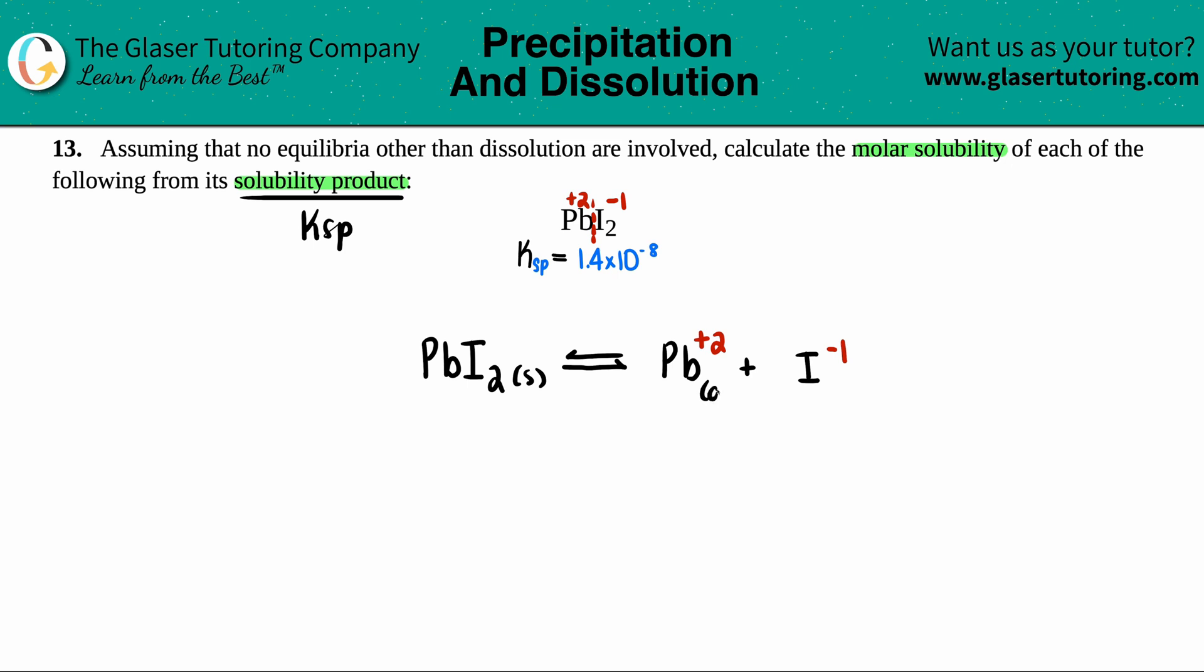Since we have charges here, these are both aqueous. Now I just have to make sure that it's balanced. There's two iodines, so I do have to put a two in front of the iodine. There was only one lead, so we're good to go.